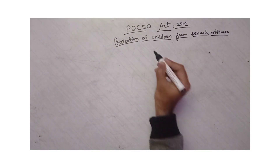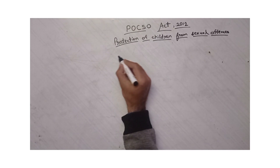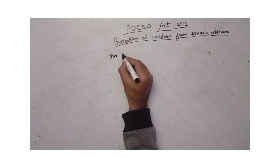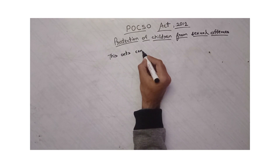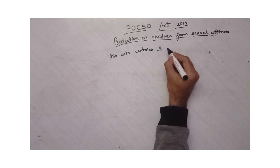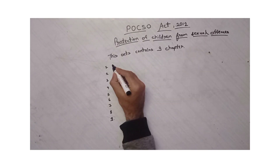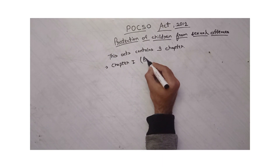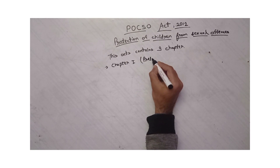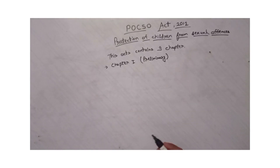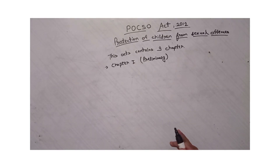This Act contains 9 chapters. Chapter 1 is Preliminary, which means the basic definitions of the terms that are used in this Act have been defined there.